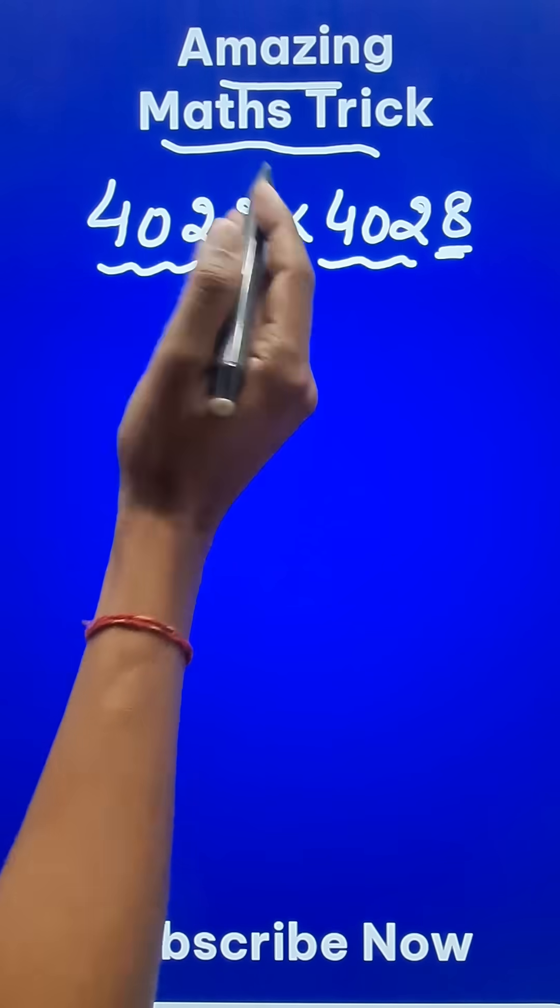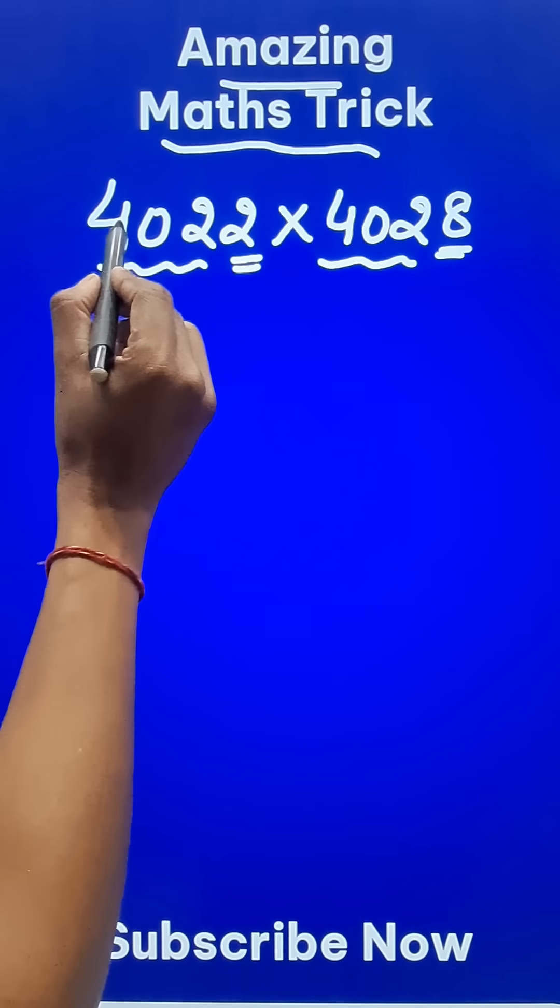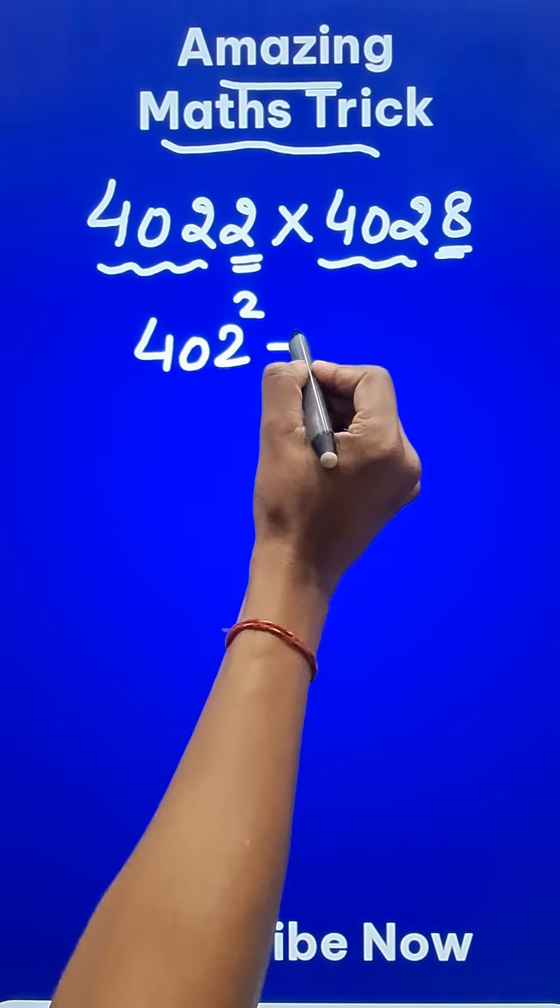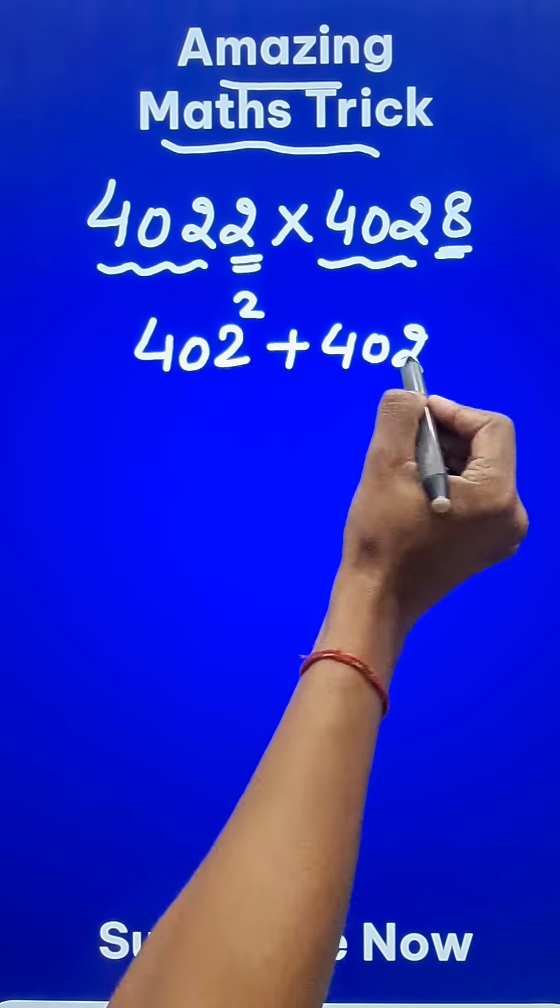In such cases we use Vedic Maths. The first number 402 has to be squared and the same number 402 is to be added to the result.